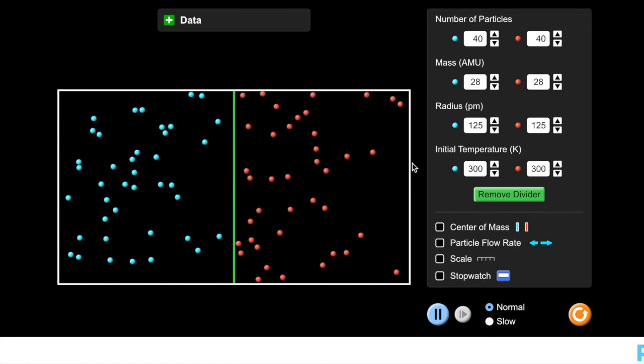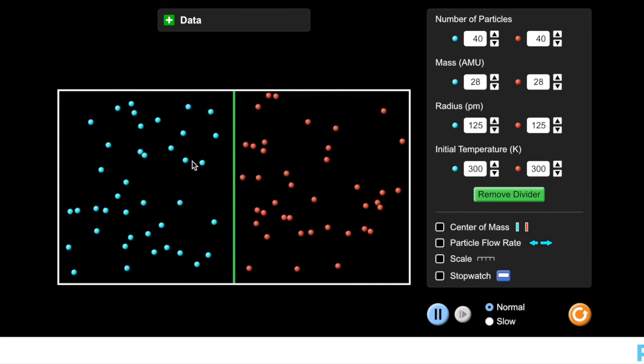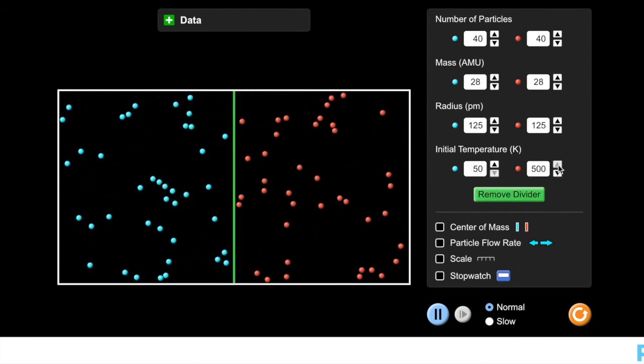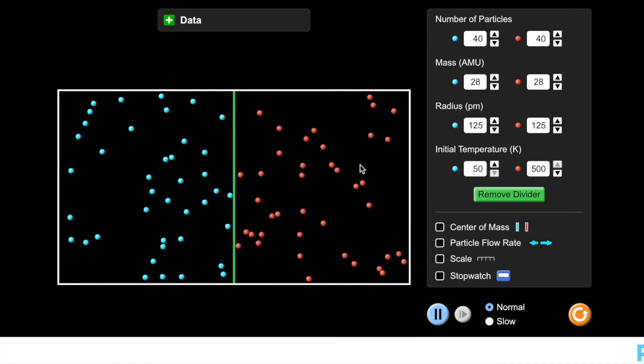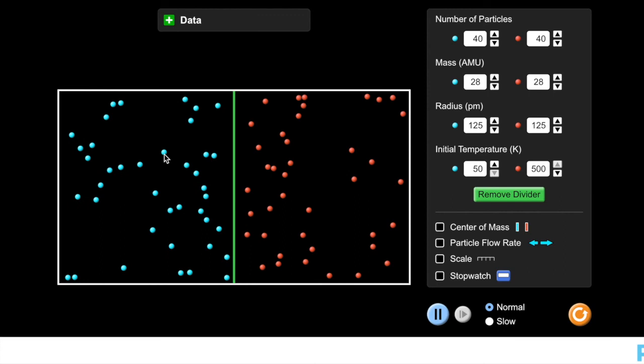The first thing we're going to do is we're going to look at how the different temperatures are going to cause these particles to move, just like we did on the whiteboard. So what I'm going to do is I'm going to maximize the temperature of the red particles, so red means hot. And lower the temperature of the blue particles, blue means cold.